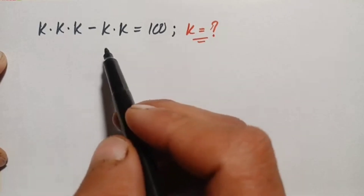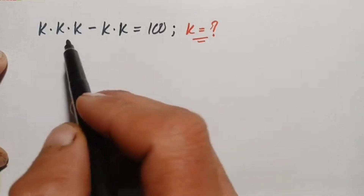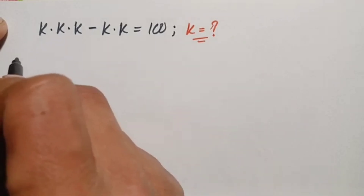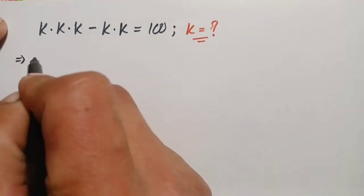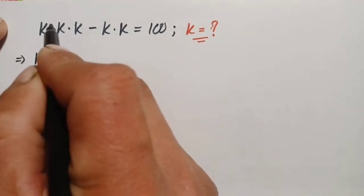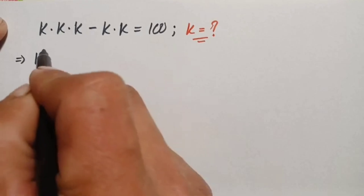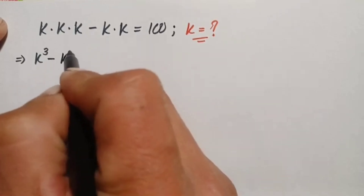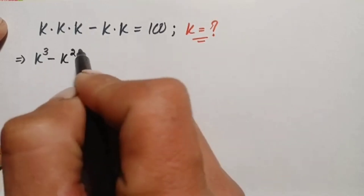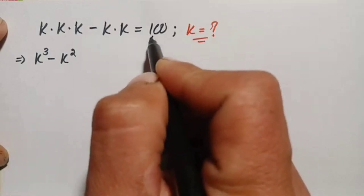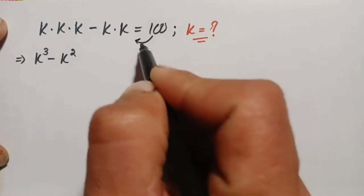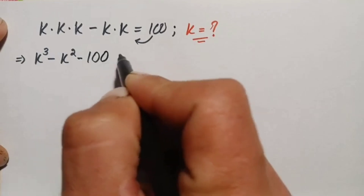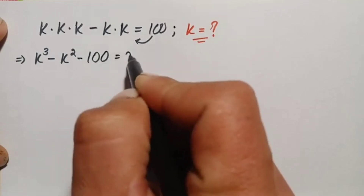To solve this problem, notice that k is multiplied three times, so we write it as k cubed. Similarly, k multiplied two times gives k squared. Moving 100 to the left-hand side gives us k cubed minus k squared minus 100 equals zero.